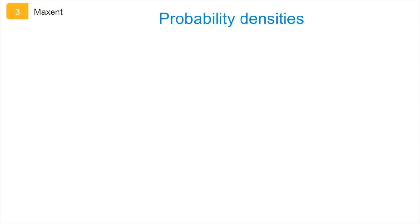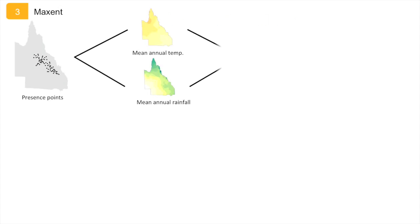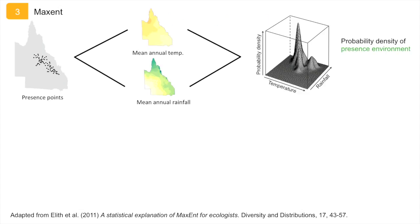To calculate the potential distribution of a species, Maxent first calculates two probability densities. For all presence points, the probability density describes the relative likelihood of all environmental variables in the model over the range of the points. So in this case, across all the presence points, the values for temperature and rainfall under the peak in the graph on the right were the most common.